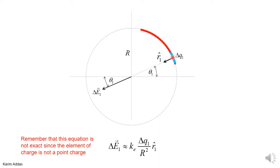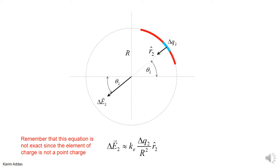The charge is delta Q1, and it produces an electric field at the origin. The electric field points in this direction if the charge is positive. If this angle is theta 1 and the unit vector from the element of charge to the point where you want to find the field is R1-hat, then the electric field is approximately — using the point charge formula — K_E times delta Q1 over R squared times R-hat. The same thing applies for delta E2, though again this is only an approximation.